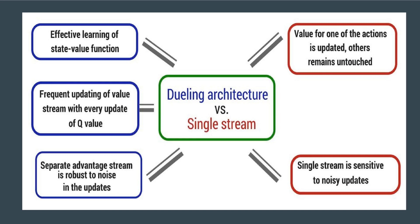The ability to learn the state value function efficiently is the key advantage of the dueling network. With every update of the Q values, the value stream V is updated, whereas in a single stream only the value for one action is updated. Frequent updating of the value stream allocates more resources to V, allowing better approximation of state values, which needs to be more accurate for temporal difference learning than standard DQN.